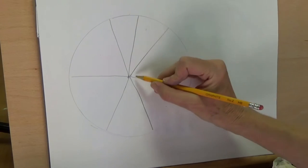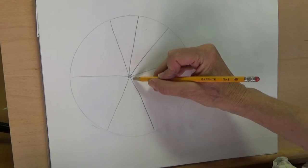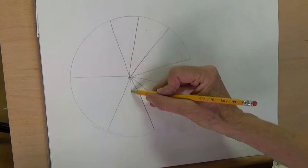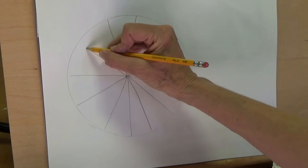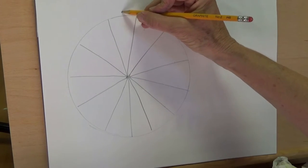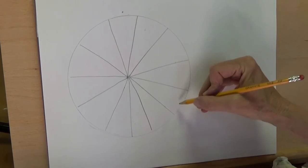They're not all perfect, they're about the same size though. So you should have 12. Count them, make sure you have 12.